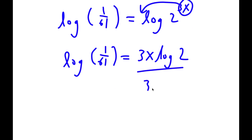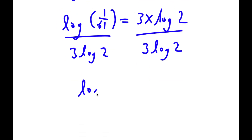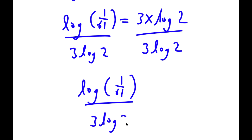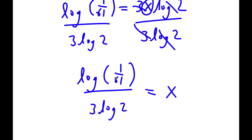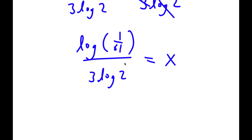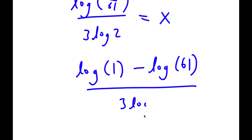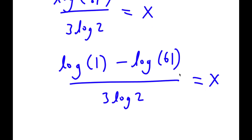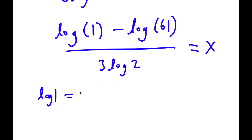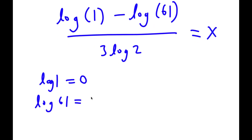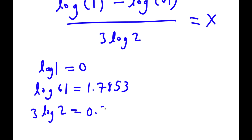To solve this, I'm going to divide both sides by 3 times log 2. So I'm left with log of 1 over 61 over 3 times log 2 is equal to x. Now log of 1 over 61 is the same as log 1 minus log 61, over 3 times log 2. Log 1 equals 0, log 61 equals 1.7853, and 3 times log 2 equals 0.9031.